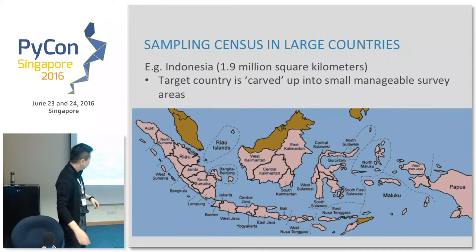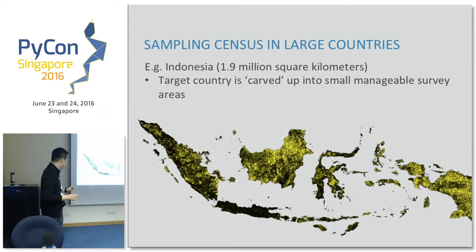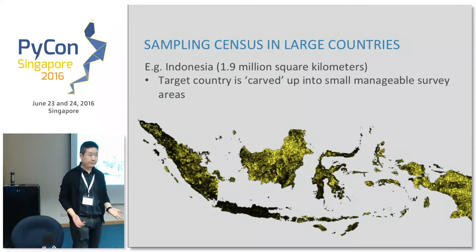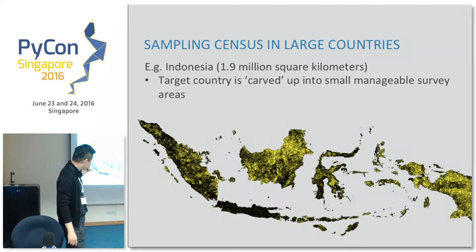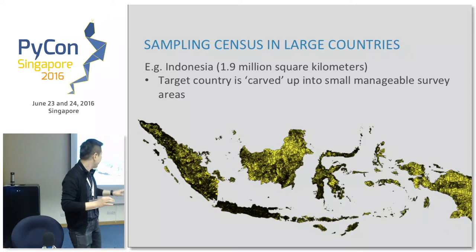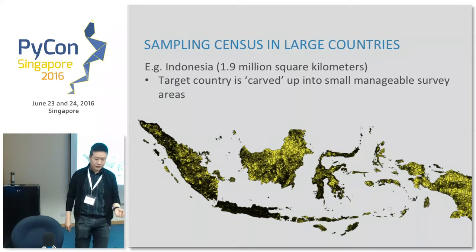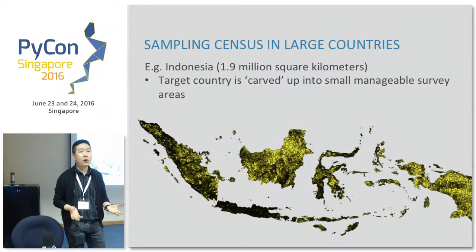What we have done is, instead of looking at the entire country as a whole, we break it up into very small regions — one block represents one survey region or region of interest where data collection will be carried out. Even so, for a country like Indonesia there are over 66,000 survey areas. It is still impossible to cover all of them.